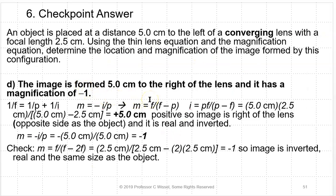An object is placed at a distance of 5 centimeters to the left of a converging lens with a focal length of 2.5 centimeters. Determine the location and magnification of the image. The image forms 5 centimeters to the right of the lens with a magnification of minus 1. Using I equals PF divided by (P minus F): with P = 5 cm and F = 2.5 cm, I equals positive 5 centimeters. The image is to the right of the lens — opposite side from the object — so it's real and inverted. Magnification equals minus I over P equals minus 5 over 5 equals minus 1. The image is inverted, real, and the same linear size as the object.